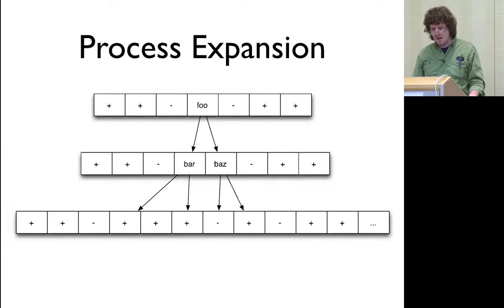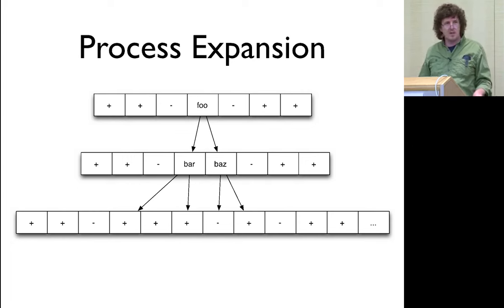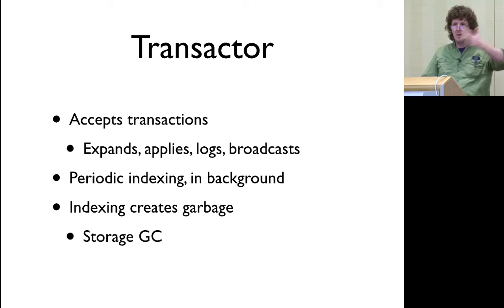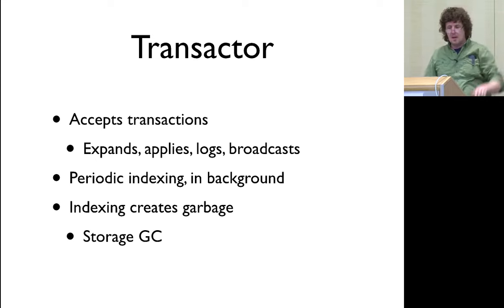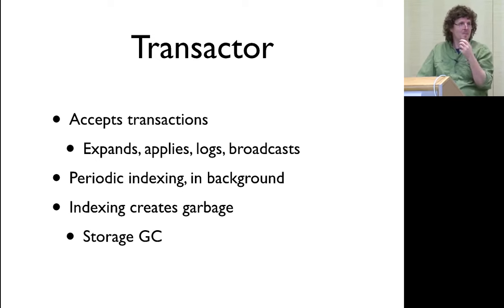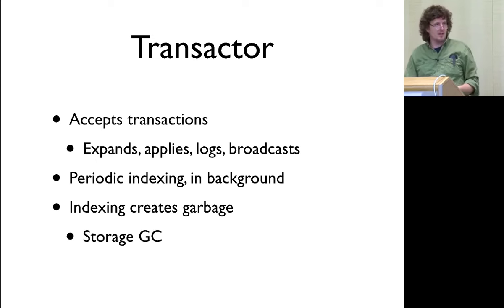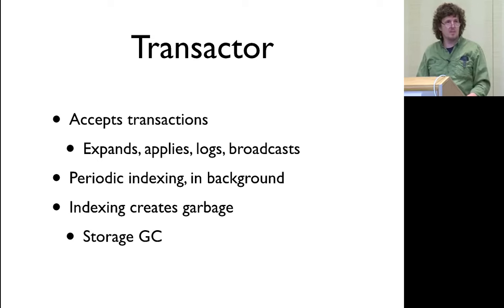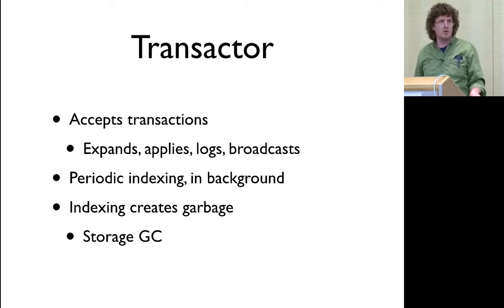The transactor basically applies the transactions, does that expansion, puts it in the log, and broadcasts that change. Because we have reified process, we can send process as a message — we can say, this is what happened, anybody who cares, here's what happened to the database. Compare that with: somebody just issued this transaction script. If I sent you that message, what can you do with it? Nothing. But if I said here are the new facts and retractions that happened as a result of somebody doing something, you could say, some of this matters to me. Indexing creates garbage, so you need some notion of storage garbage collection, though it can't be root-tracking-based because you don't know what processes are using the past.